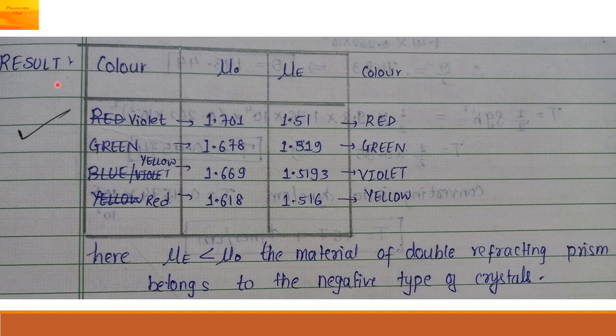And the result: we write down the refractive index for each color. This is for the ordinary spectrum. And this is for the extraordinary spectrum. We can take the mean of these indices. We get mean mu O and mean mu E. And we can verify which one is greater. Here mu E is less than mu O.